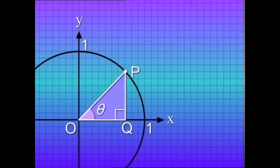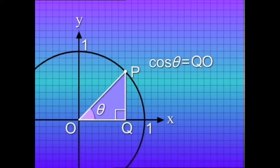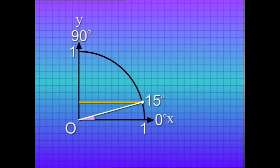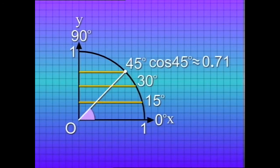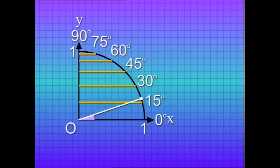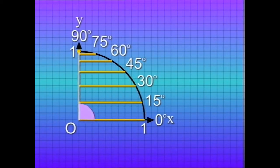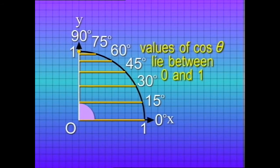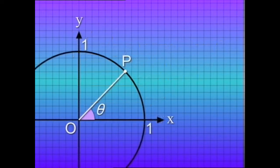The cosines and tangents of angles are also worked out with this method. Cosine theta equals the ratio of the adjacent side to the hypotenuse, or QO divided by one. Therefore cosine theta equals QO, which equals PR. From the diagram it can be seen that when angle theta increases, cosine theta decreases. When theta approaches zero degrees, cosine theta approaches one; conversely when theta approaches 90 degrees, cosine theta approaches zero. Therefore the values of cosine theta lie between zero and one.